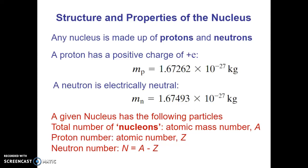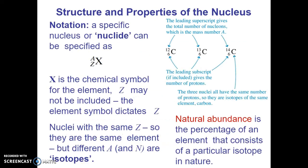If we wanted to compute the number of neutrons, it's the atomic mass number minus the atomic number. We denote certain nuclei through this notation where capital X is the chemical symbol for the element.